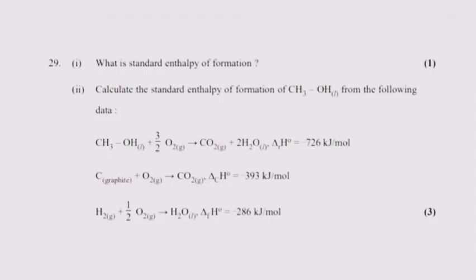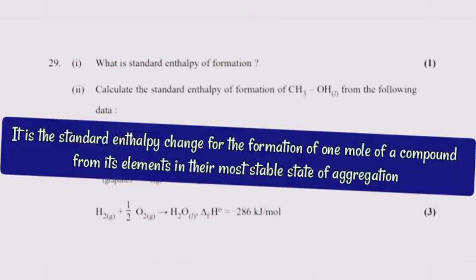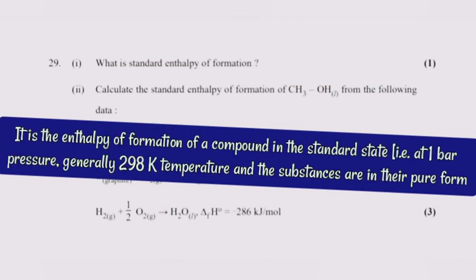Question 29, part 1: What is standard enthalpy of formation? Answer: It is the standard enthalpy change for the formation of one mole of a compound from its elements in their most stable state of aggregation. Or, it is the enthalpy of formation of a compound in the standard state. That is, at one bar pressure, generally 298 Kelvin temperature, and the substances are in their pure form.